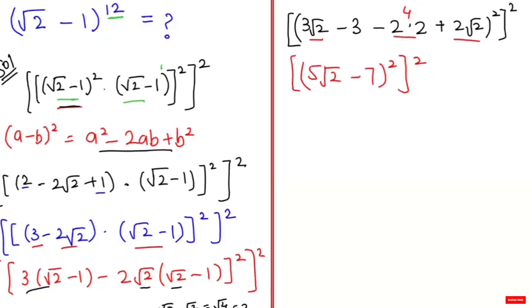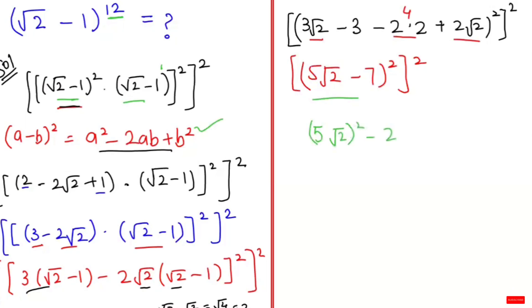Now I'm going to apply the algebraic formula again. So it will be: (5√2)² - 2 × (5√2) × 7 + 7², to the power of 2.